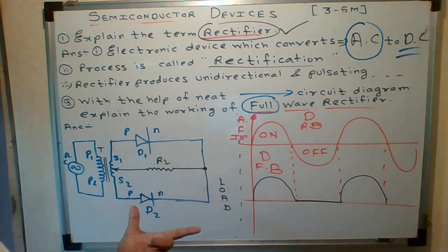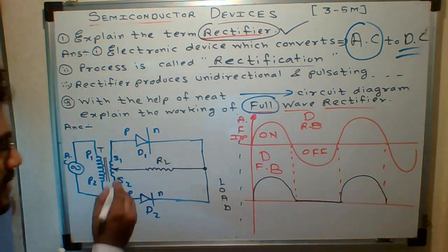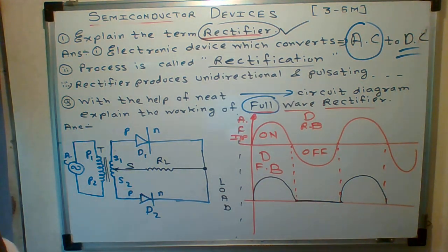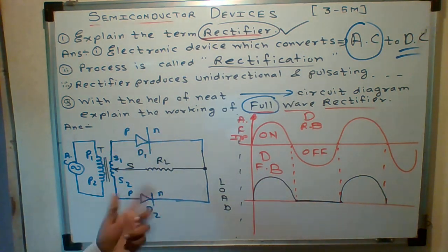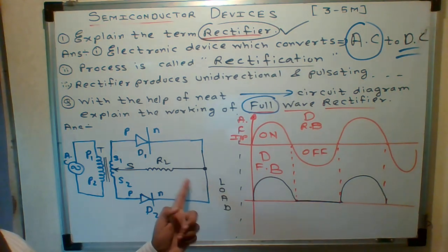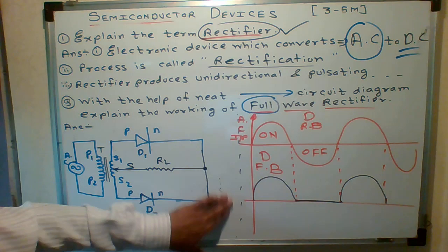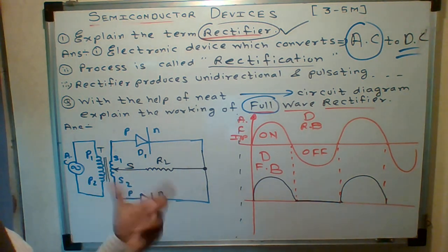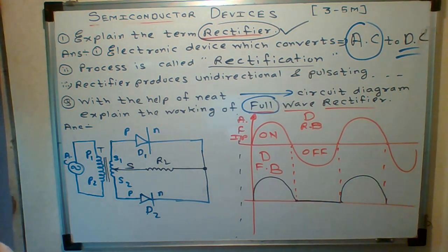Hope you understood the circuit diagram. So here we connect two diodes, and we use center tapping — let's call it point S. One load resistance RL is connected. The load means some television, tube light, anything. Otherwise, everything remains the same. It's really easy to draw — don't take too much tension about drawing half-wave rectifier and full-wave rectifier.